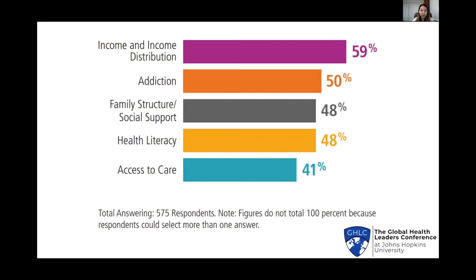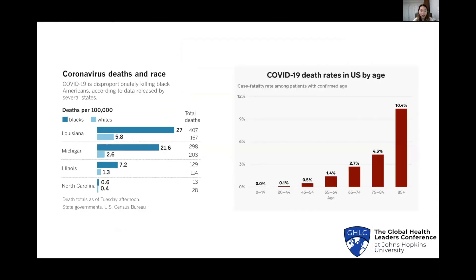Data collected by evolvehealth.com clearly shows how much access to care matters when it comes to health outcomes, just as much as family structure and social support. Despite protests and society's urge to reduce the gap in healthcare, it still remains a major problem today — the data gaps and social determinants within our society are not addressed as much as other issues. Charts collected by the LA Times clearly show that death rates among Black Americans are dramatically higher than among white Americans, and that death rates among the elderly are dramatically higher than among youth during times like this.